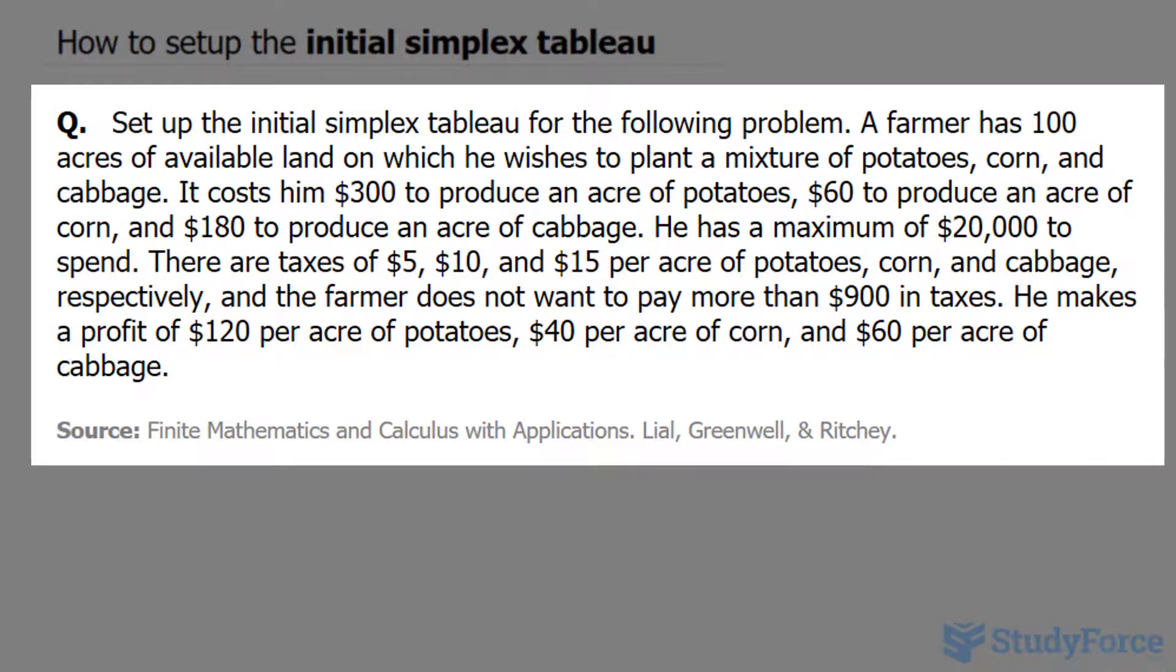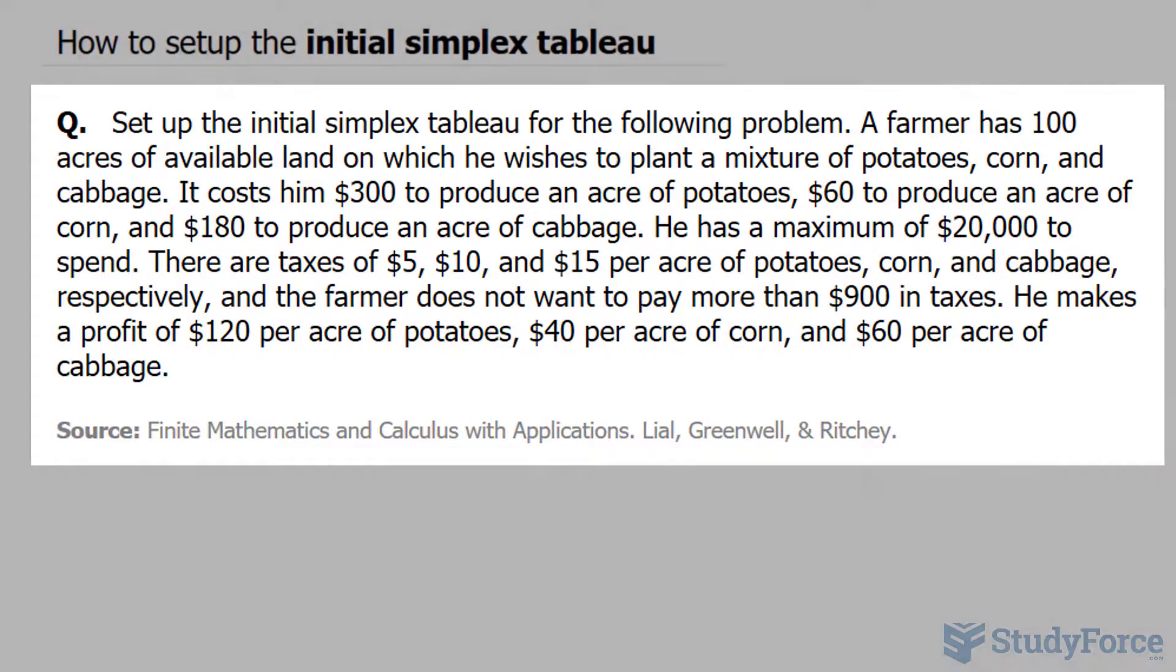He has a maximum of $20,000 to spend. There are taxes of $5, $10, and $15 per acre of potatoes, corn, and cabbage respectively. And the farmer does not want to pay more than $900 in taxes. He makes a profit of $120 per acre of potatoes, $40 per acre of corn, and $60 per acre of cabbage.